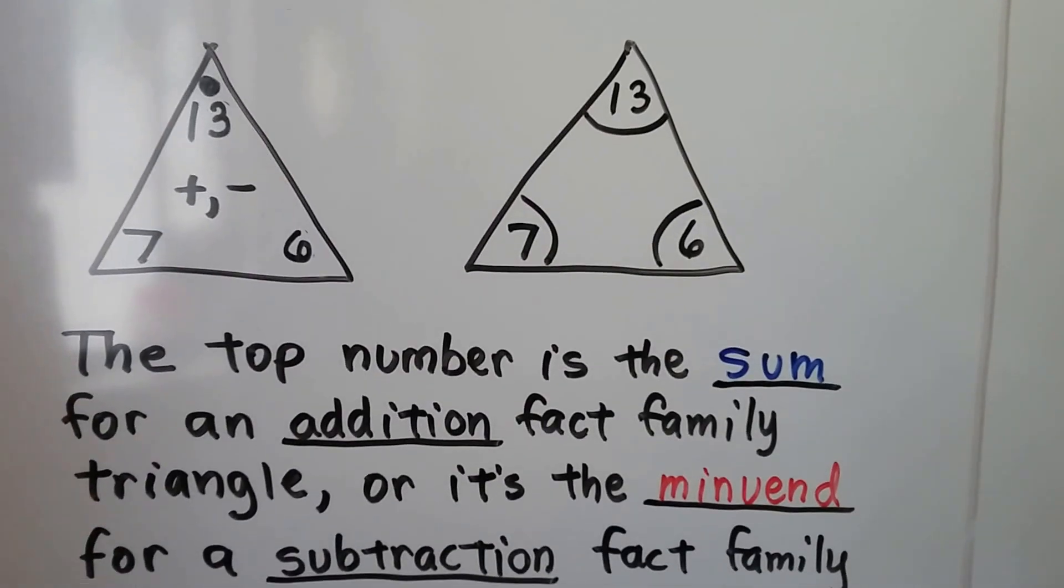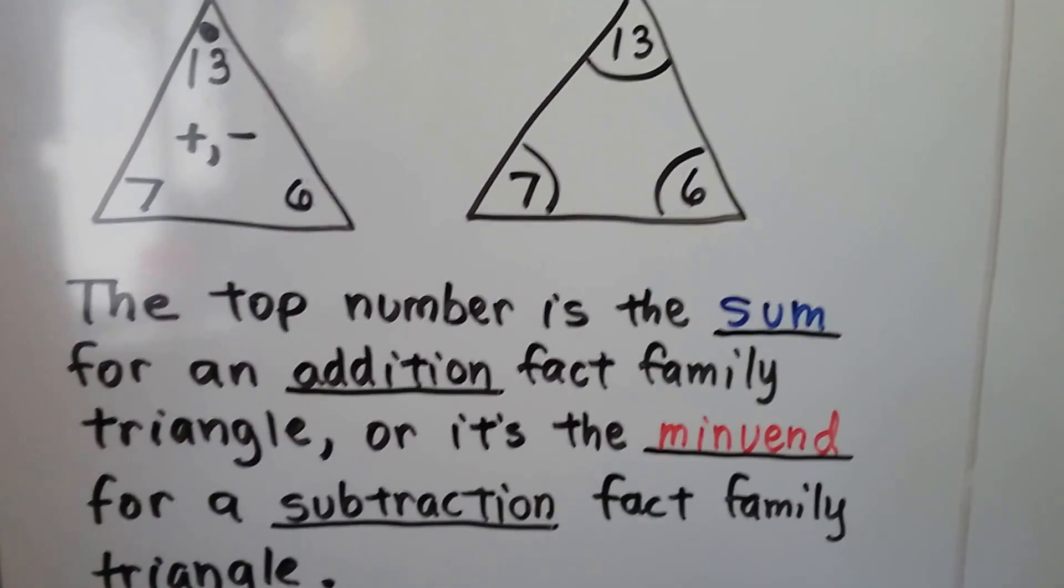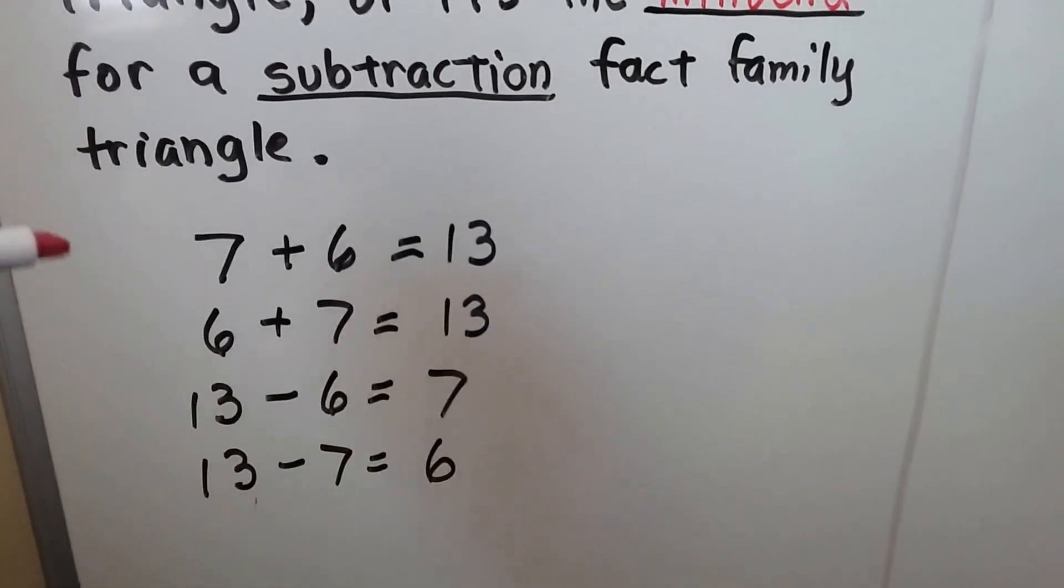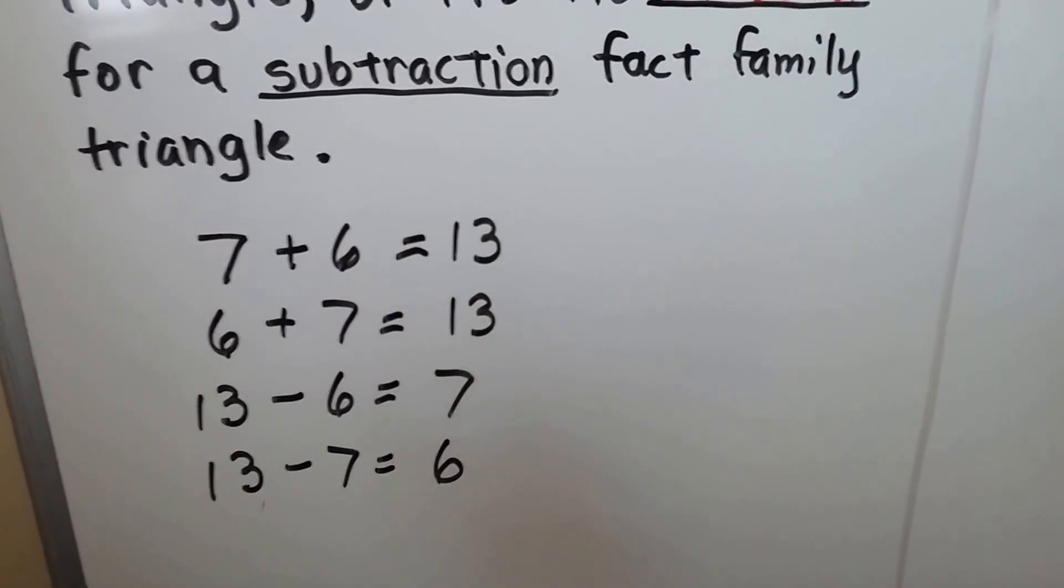The top number is the sum for an addition fact family triangle or it's the minuend for a subtraction fact family triangle. And for seven, six, and thirteen, these are our fact families. We have two addition sentences and two subtraction sentences.